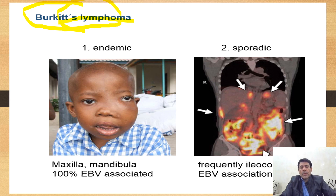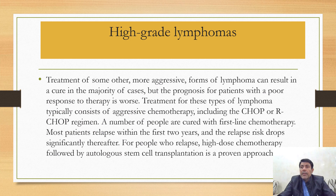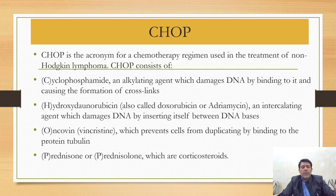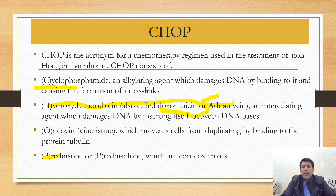Burkitt lymphoma is caused by the Epstein-Barr virus. Treatment of aggressive Non-Hodgkin lymphoma uses a combined chemotherapy protocol called CHOP, and in some instances rituximab is added, making it R-CHOP. The R-CHOP regimen comprises: C — cyclophosphamide (an alkylating agent), H — hydroxydaunorubicin, also called doxorubicin or adriamycin, O — vincristine, and P — prednisolone.